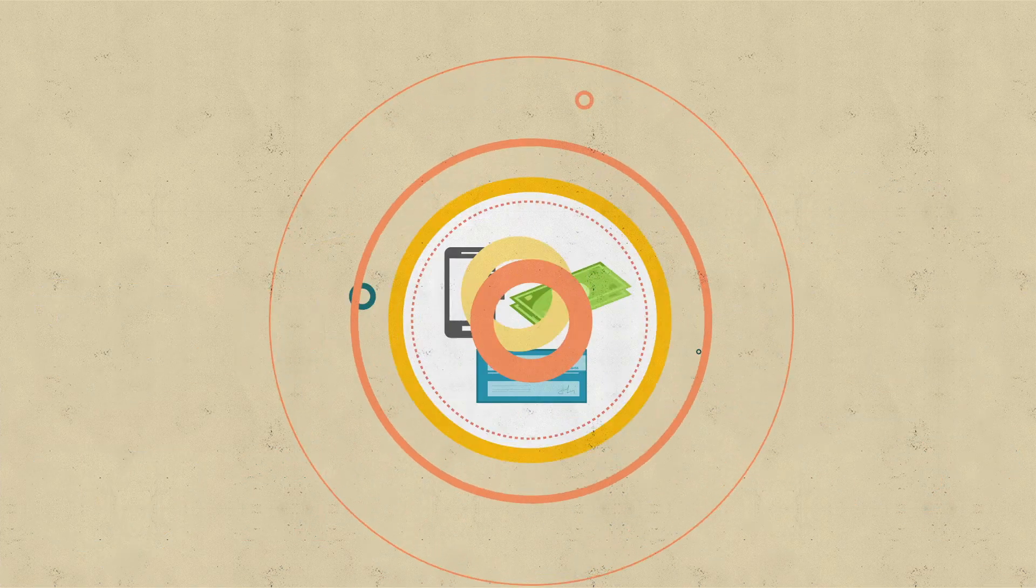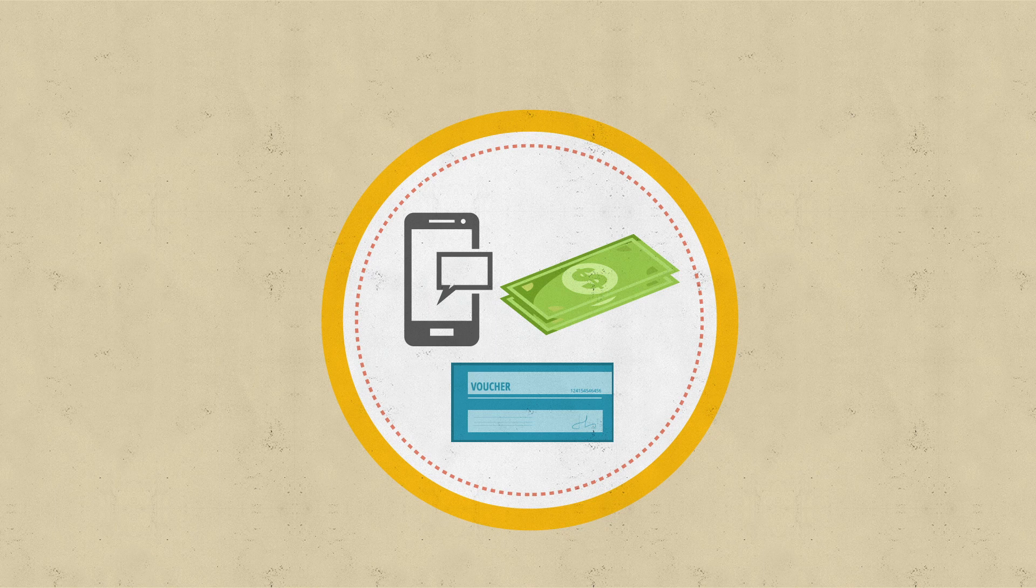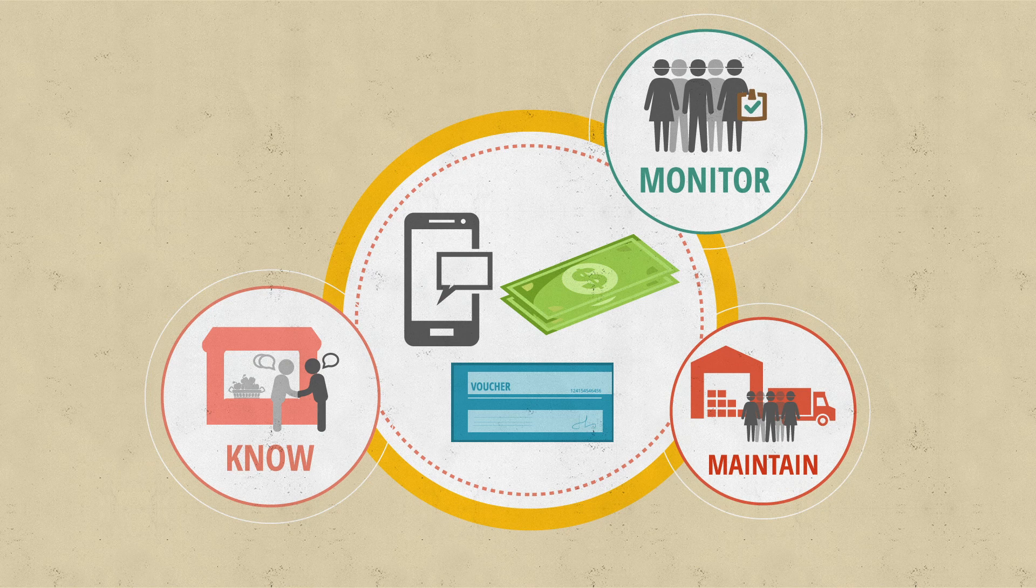We all want to make the right decisions in an emergency, and have the most impact. That means we need to get to know our local market systems, monitor while we're delivering, and maintain our own supply chain for when it's needed.